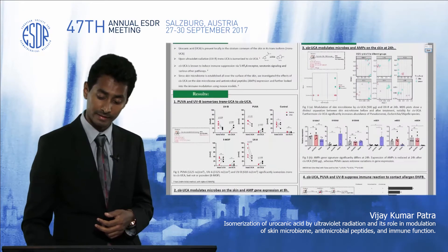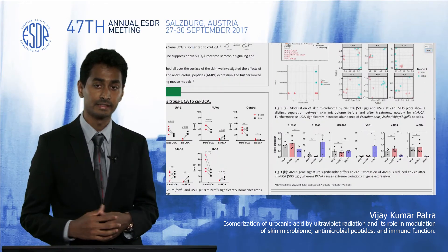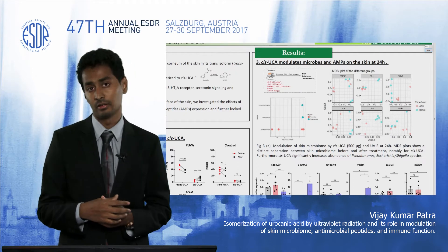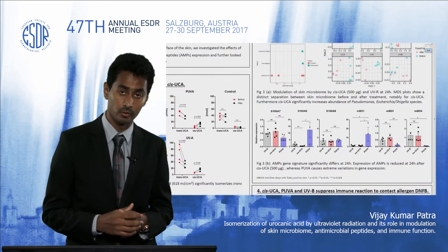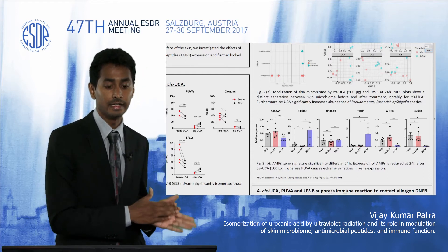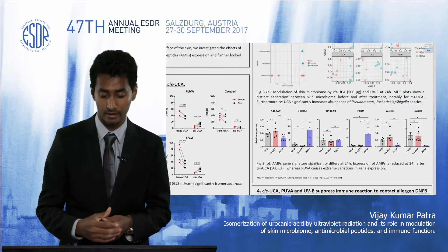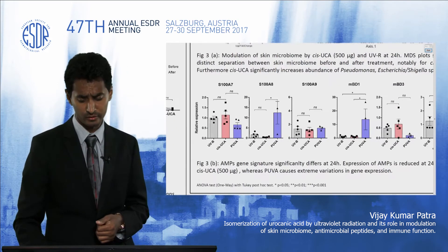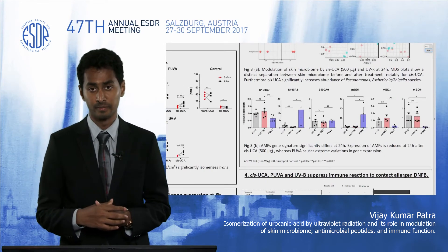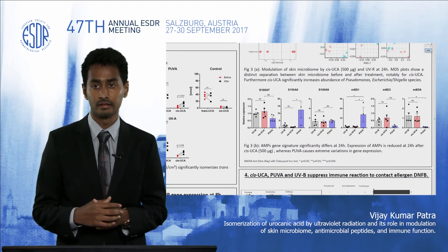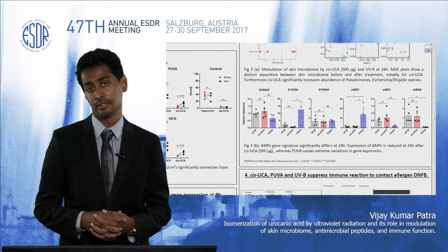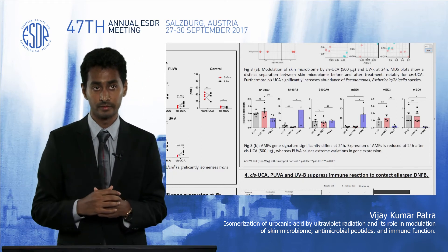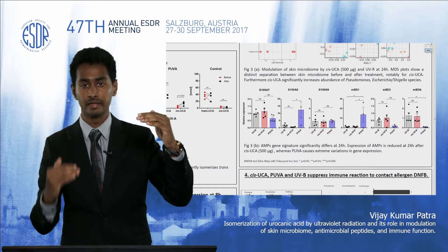We also wanted to see what happens at 24 hours. We performed similar experiments but took samples at 24 hours after UV radiation or cis-urocanic acid treatment. Interestingly, we found that species which were downregulated at eight hours — such as E. coli, Pseudomonas, and Staphylococcus — showed higher abundance at 24 hours. We also found that most antimicrobial peptides were downregulated at this time point.